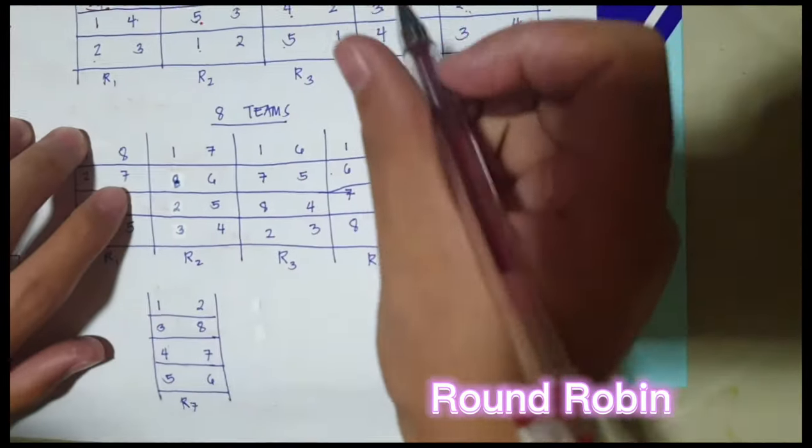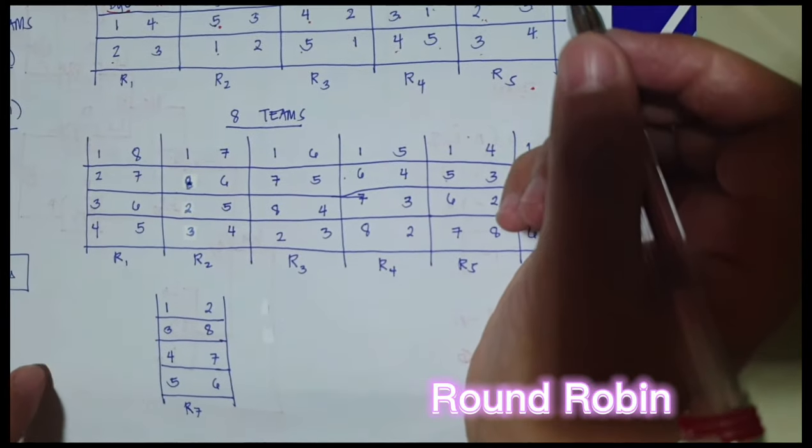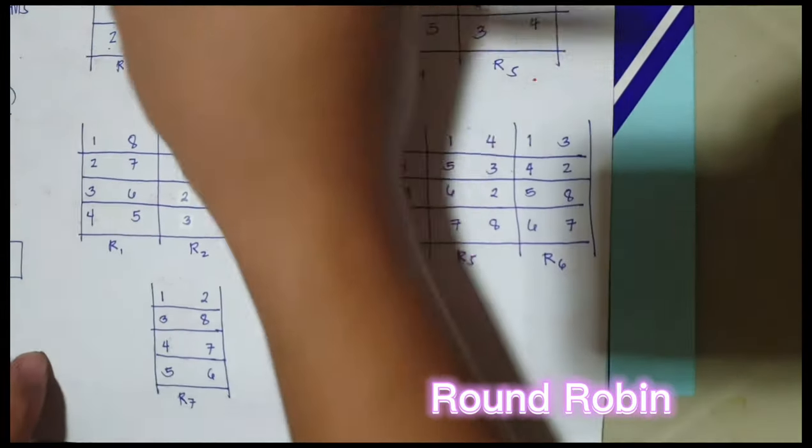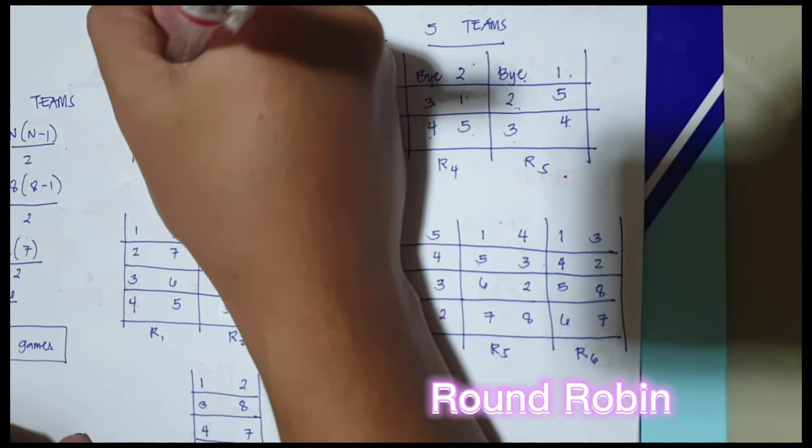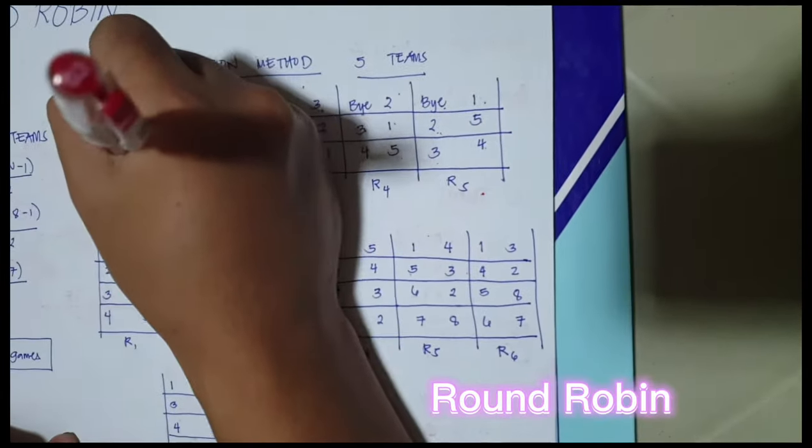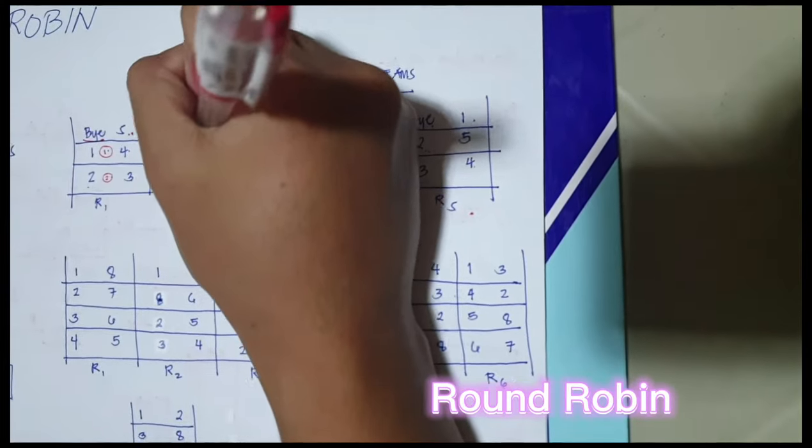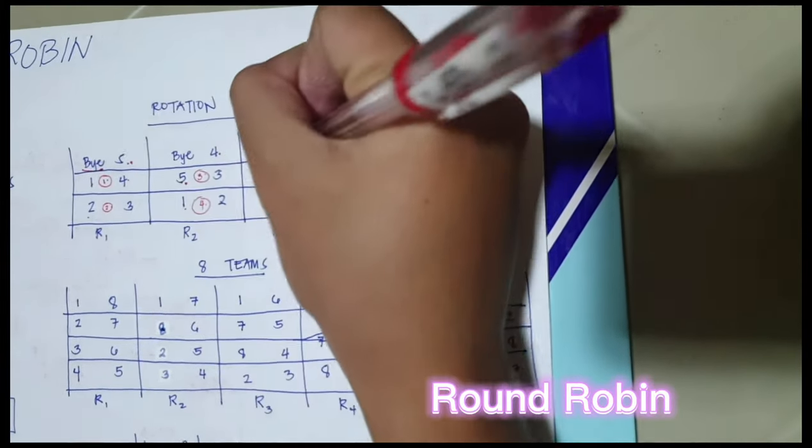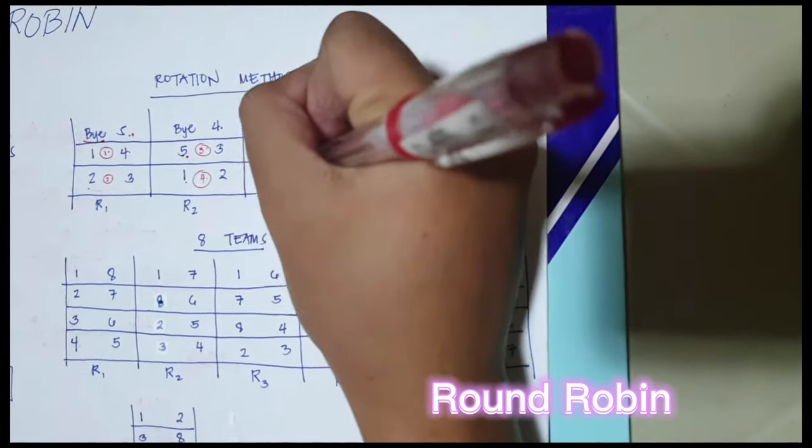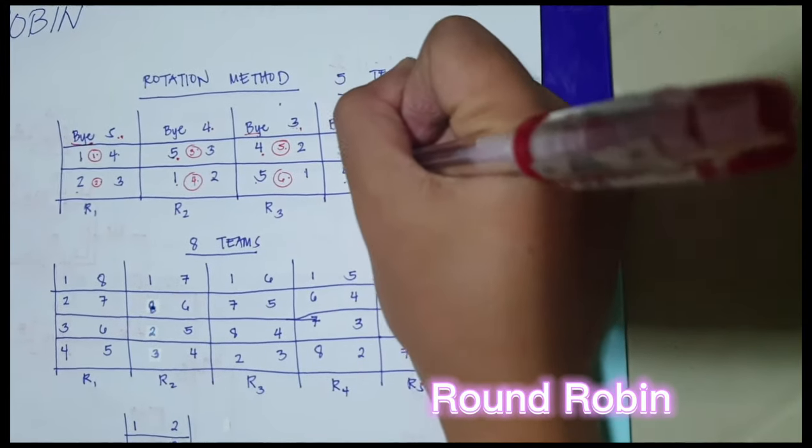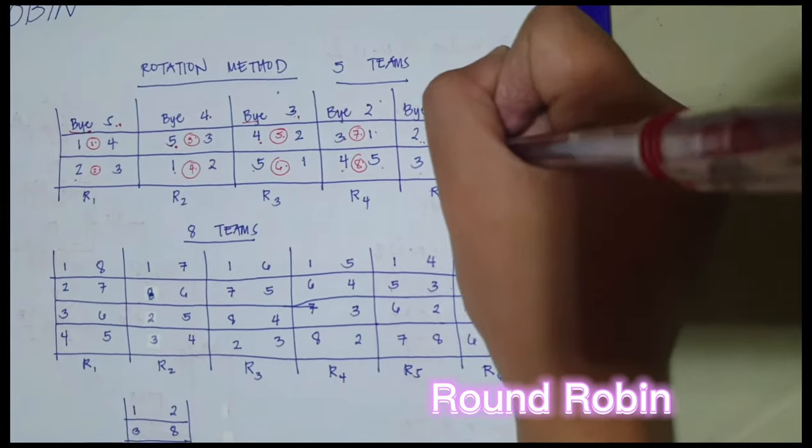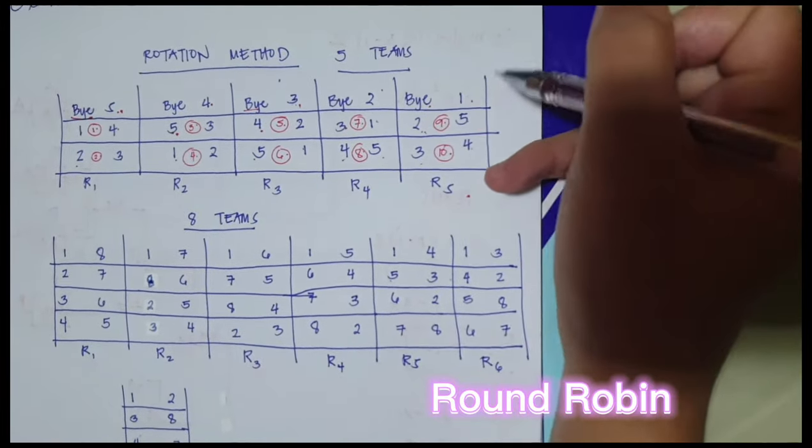So we're going to assign game numbers. So there are 10 games. So for example, this is game number 1. So we're going to put 1 here. Game number 2, game number 3, game number 4, game number 5, game number 6, game number 7, game number 8, game number 9, game number 10.